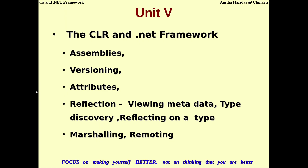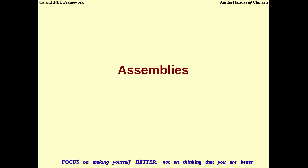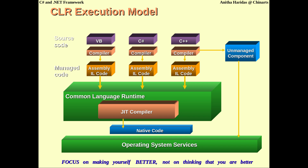In C# and .NET programming, we are currently discussing the fifth module. We have completed what is the architecture of the .NET framework, what is an attribute, and what is reflection. In this video, we are going to discuss what is an assembly in the .NET architecture. The CLR execution model follows these steps. The source code can be of any language like Visual Basic, C#, or C++.